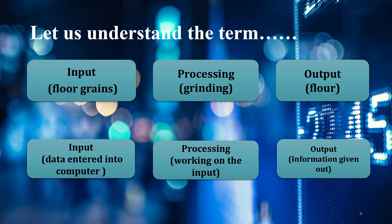Processing is done by the CPU. The output — the third function — means information given out, which is displayed on the monitor screen. We press the keys one through nine, the CPU processes them, and the monitor screen displays those numbers. These are the three functions of a computer: input, processing, and output.